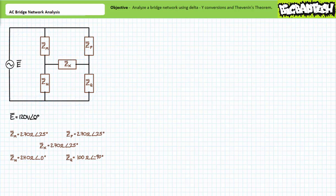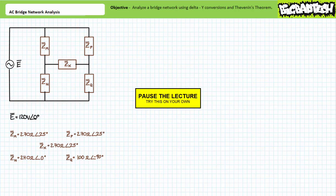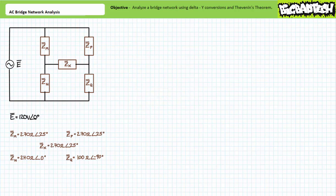Two methods can be used to analyze bridge networks. The first necessitates the use of a delta-to-Y conversion and the second necessitates the use of Thevenin's theorem. Ideally the viewer already has ample experience with both techniques, and I'm encouraging you to get actively involved and treat this lecture as a series of illustrated example problems. If you feel capable of arriving at the answers yourself, pause the lecture and do so. If your answers don't match, rewind and correct any mistakes.